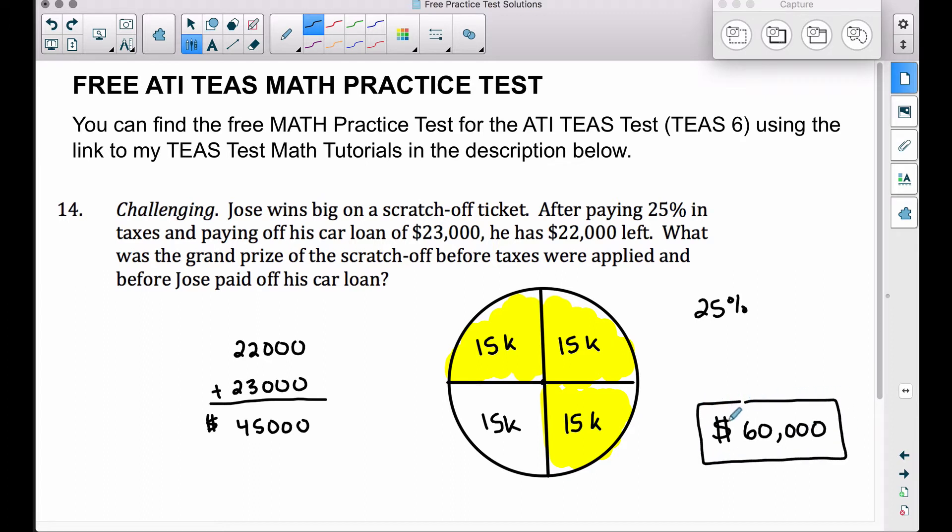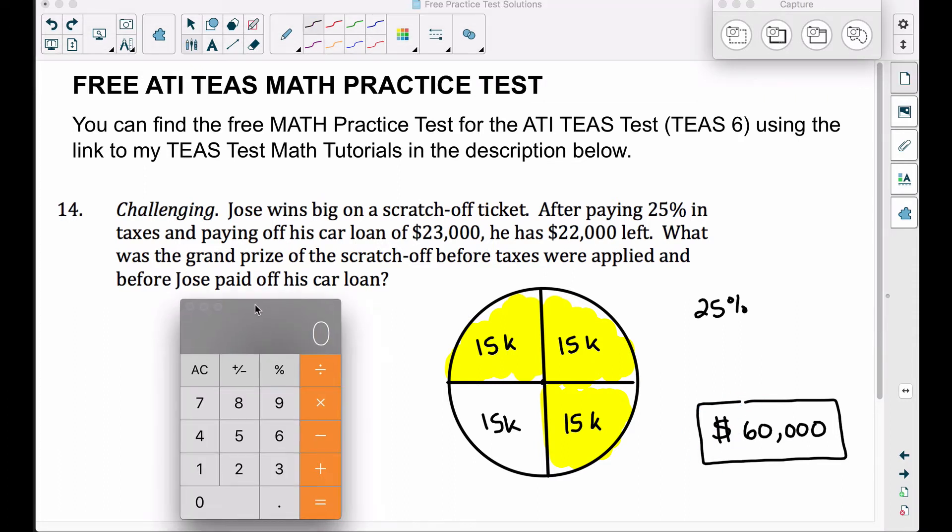Let's take this and let's check our work. Now this is actually a very good strategy to do with a multiple choice test. Suppose this was one of your answer choices. Let's just work through the problem. Suppose Jose won $60,000. You got to pay 25% in taxes.